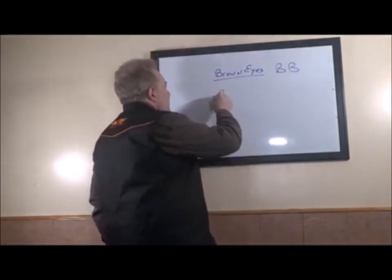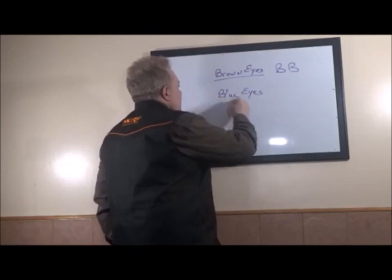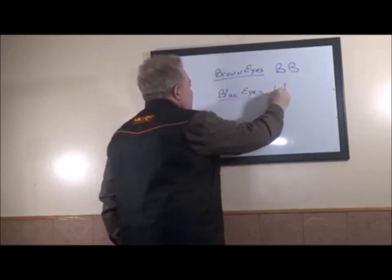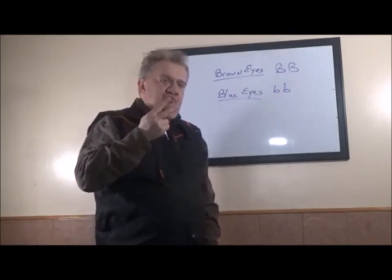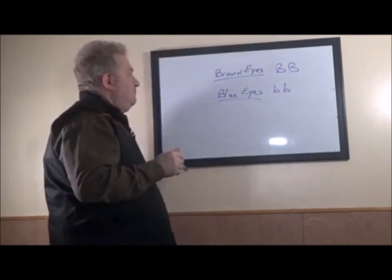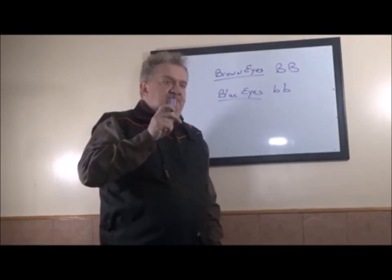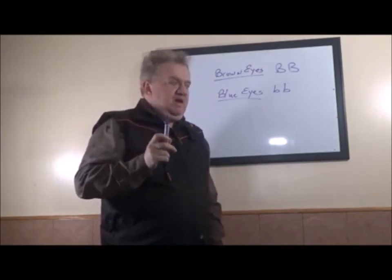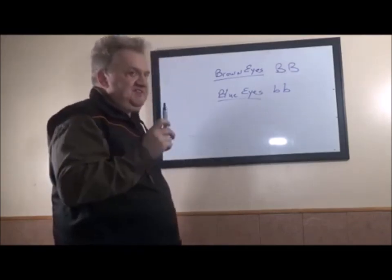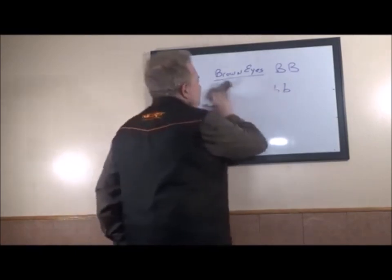And you have a parent with blue eyes, which we are going to write as lowercase b and lowercase b. You have to have both recessives for the child to be born with blue eyes. Now, I have blue eyes. Both my mother and my father had blue eyes. My wife has brown eyes. What would our children look like based on the fact that I have blue eyes and my wife has brown eyes?